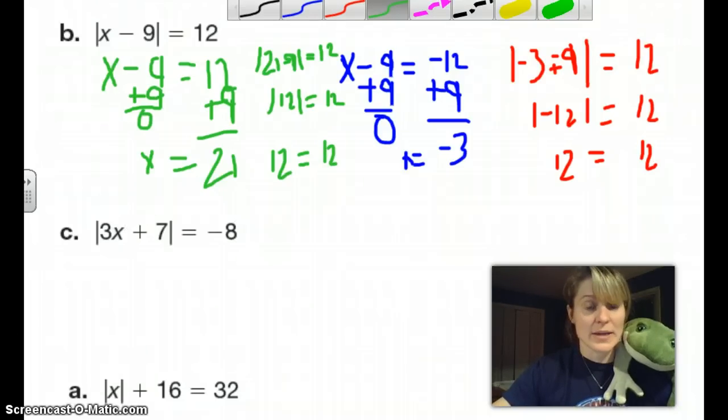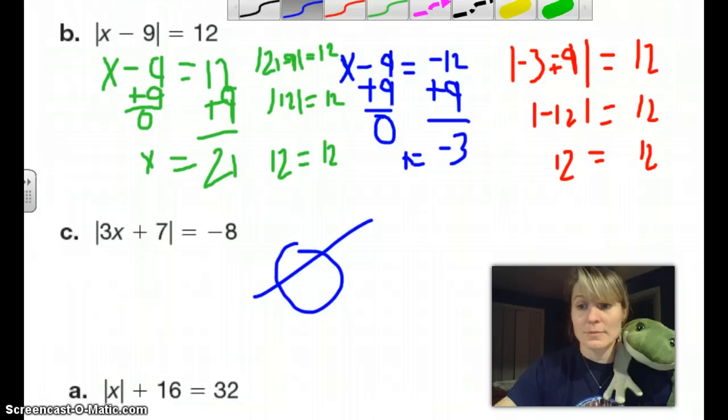Now we're going to look at this one. Always look at your questions first before you start solving them. This says the absolute value of 3x plus 7 equals negative 8. Your first inclination might be just to solve it, but you have to remember, what does absolute value mean? It means whatever the answer is in here is going to change to positive. So is it ever going to be able to equal negative 8 if this always makes it positive? The answer is no. This is a no-solution problem.